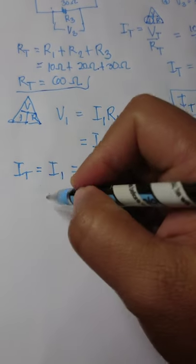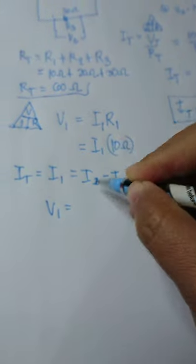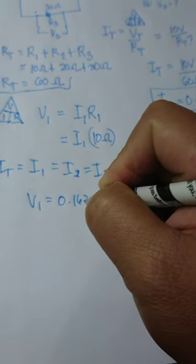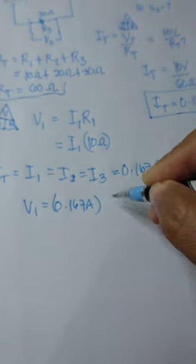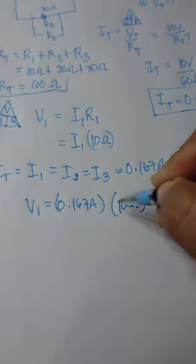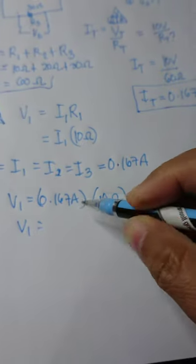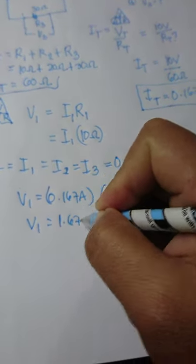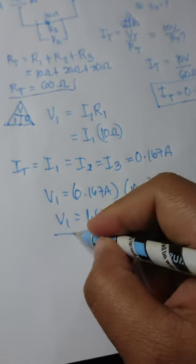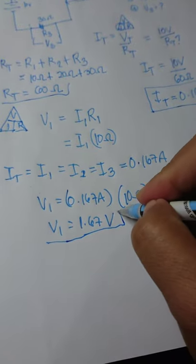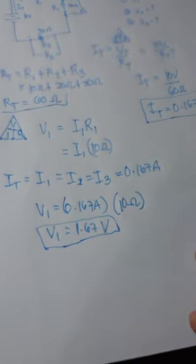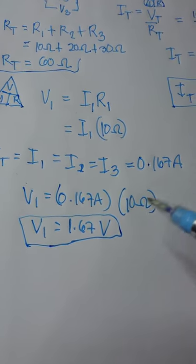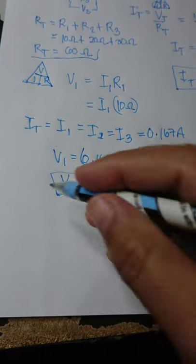Then we substitute to get the value of V1. I1 is equal to 0.167 ampere times 10 ohms, so we get the value of V1 as 1.67 volts. Don't forget to write the correct unit. Since we are looking for the voltage, we will be using the unit of volts.